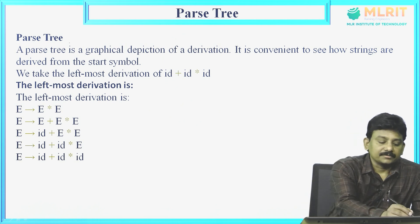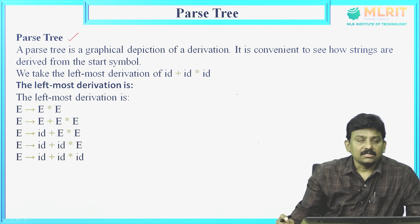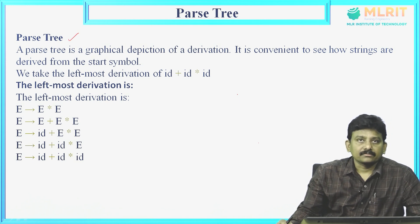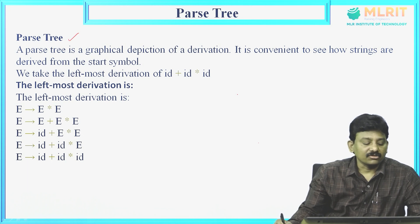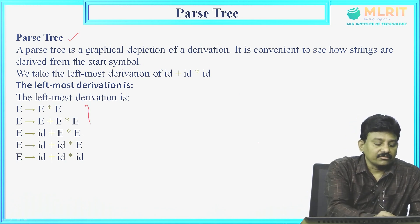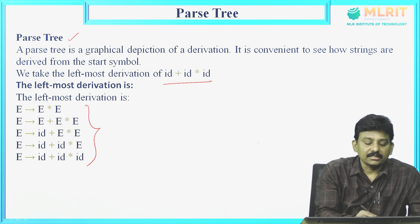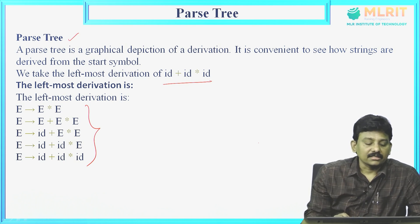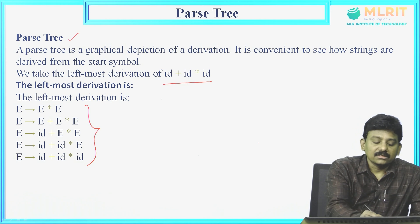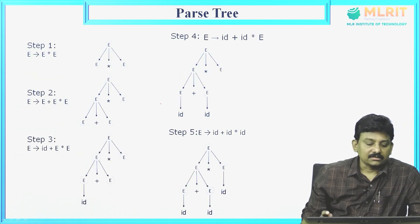Next topic is parse tree. Parse tree is a graphical representation of a derivation. This is the leftmost derivation for the string id plus id star id — just now I derived this id plus id star id. The parse tree for this is as follows.